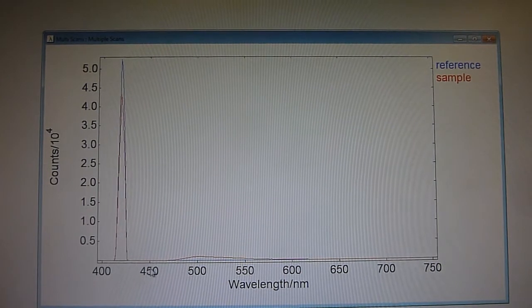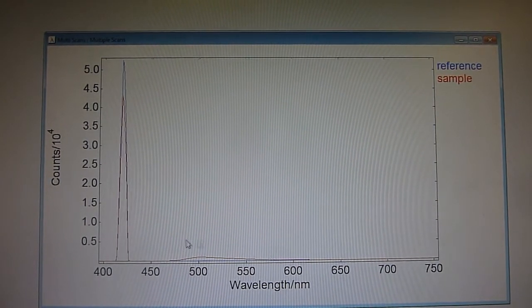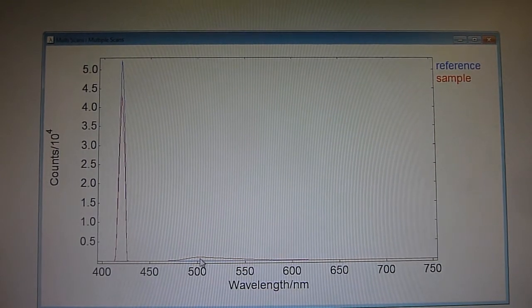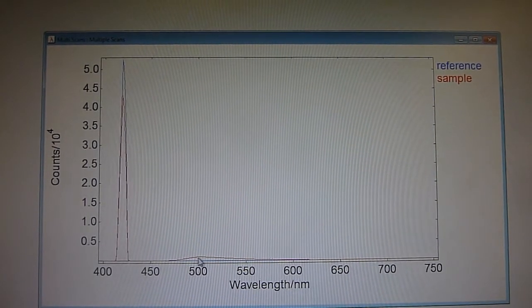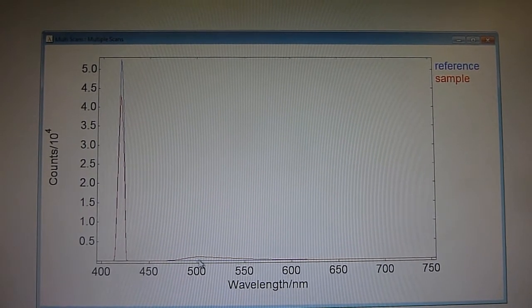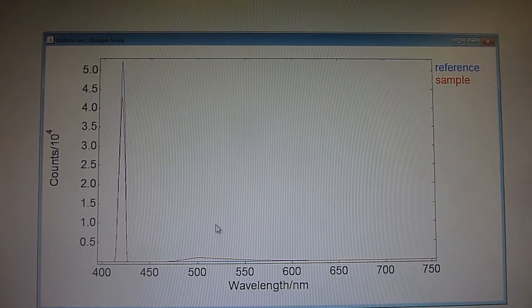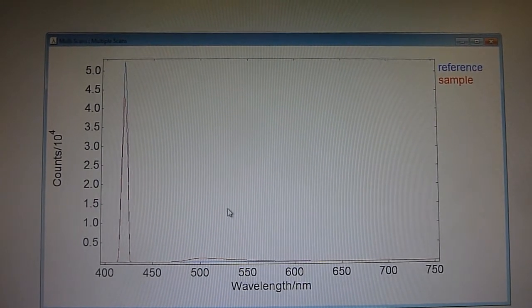Whereas in the region here between 450 and 650 we're looking at where essentially the sample is fluorescent. The difference between these two peaks here represents the emitted light, and the ratio between those two is essentially the quantum yield.